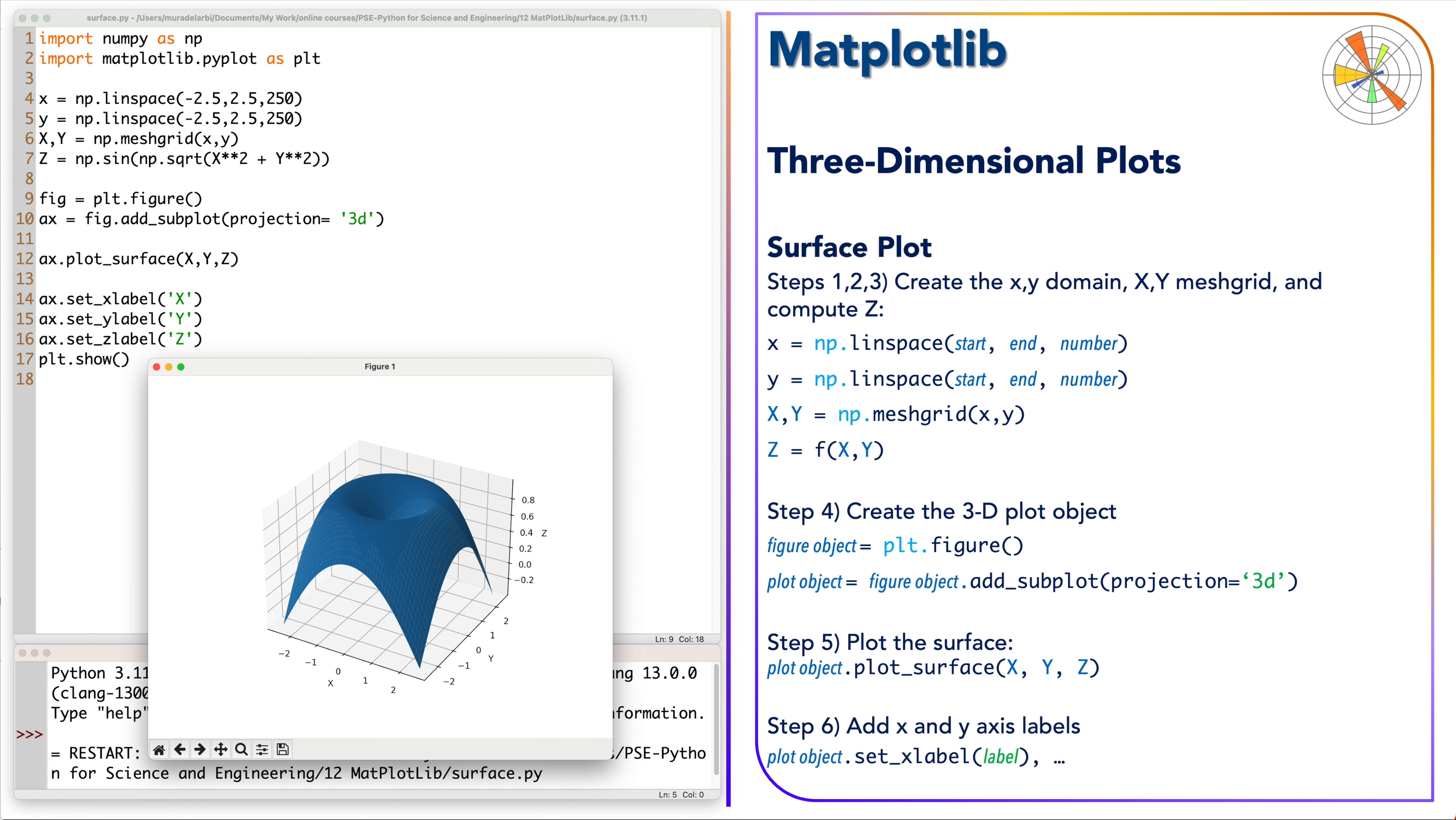You can control the view angle by moving the three-dimensional surface by clicking and holding the mouse left button, then moving the object or moving the plot in any direction you like.